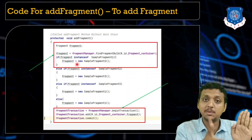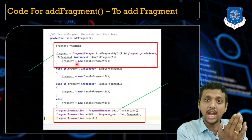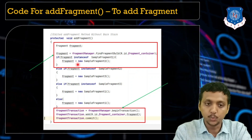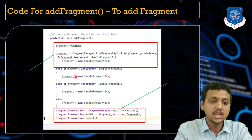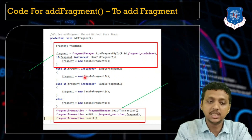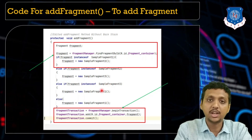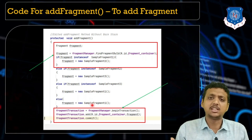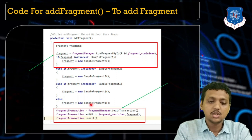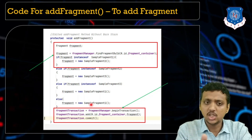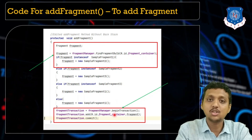If the container contains SampleFragment1, we add SampleFragment2. Else if it contains SampleFragment2, we add SampleFragment3. If it contains SampleFragment3, we go back to SampleFragment1. In the default case we also implement SampleFragment1. Only this logic part changed — everything else remains the same.